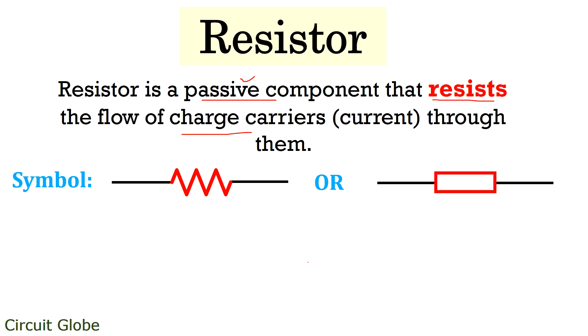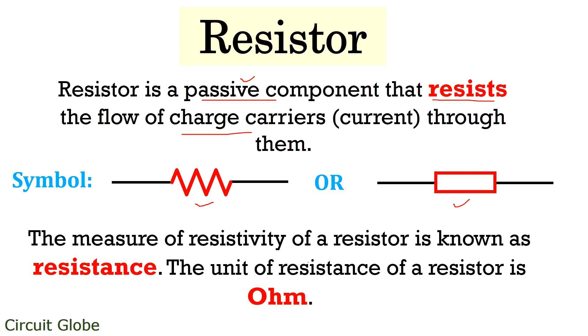Let's see the symbolic representation of resistor. It can either be represented in the form of zigzag lines or just a small square box. The property by which the resistivity of a resistor is measured is known as resistance and its unit is ohm.